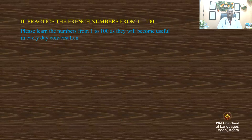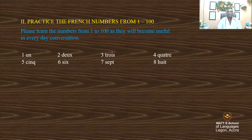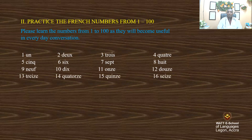Let's have a look at how we can practice the numbers: 1, 2, 3, 4, 5, 6, 7, 8, 9, 10, 11, 12, 13, 14, 15, 16, 17, 18, 19. These are the ones and the tens.